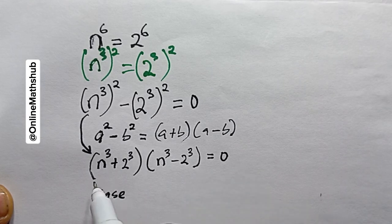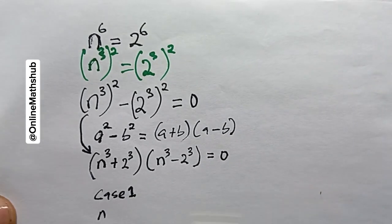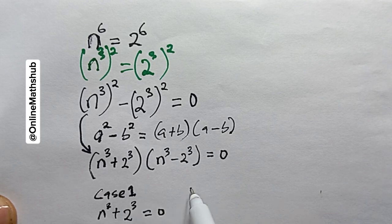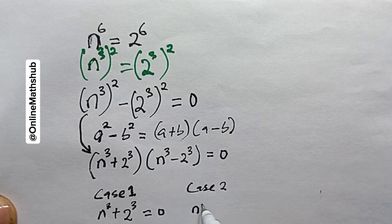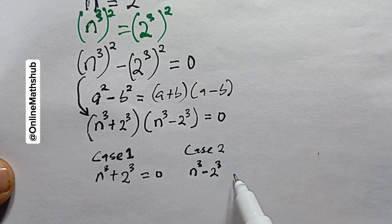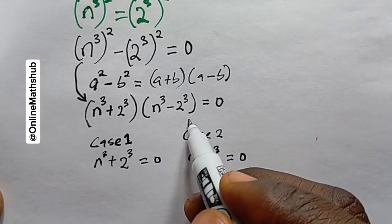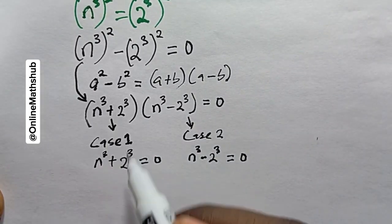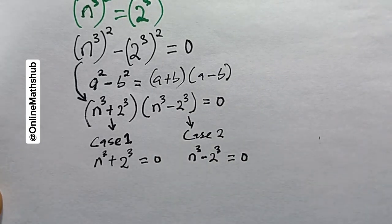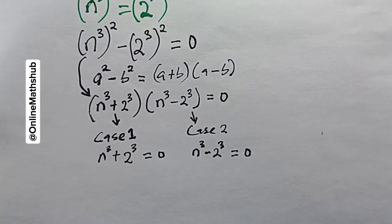For the product of these two terms to equal zero, either the first term, n^3 + 2^3, equals zero — that's Case 1 — or the second term, n^3 - 2^3, equals zero — that's Case 2. Either one of these being true is when the product equals zero.